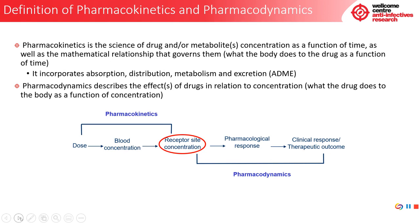Pharmacodynamics describes the effect of drugs in relation to concentration — simply put, what the drug does to the body as a function of concentration. The relationship between pharmacokinetics and pharmacodynamics can be visualized where a dose leads to a blood concentration, which leads to receptor site concentration. The receptor site concentration drives the pharmacological response, which in turn elicits the clinical response or therapeutic outcome. The link between PK and PD is the receptor site concentration, which is key.